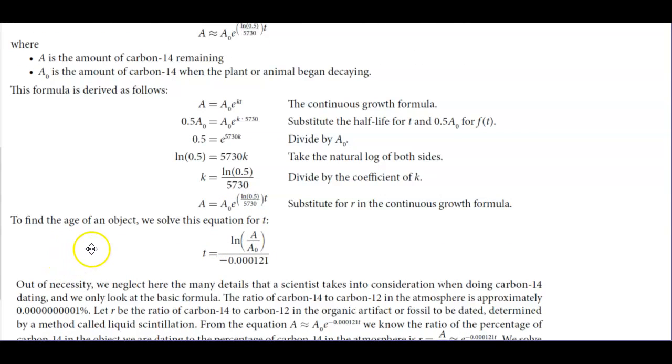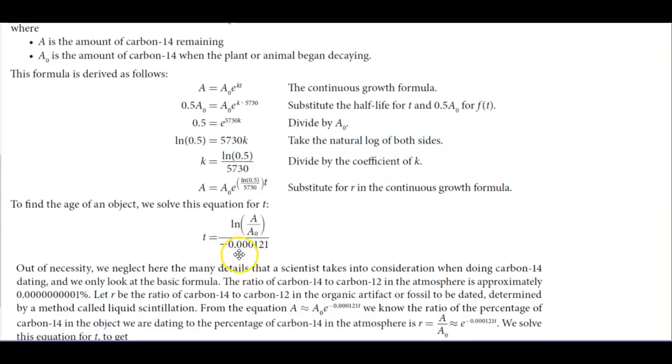To find the age of an object, we solve this equation for t. In order to solve for t, we get t equals the natural log of the amount of carbon remaining divided by the amount of carbon when the plant or animal began decaying, divided by negative 0.000121.